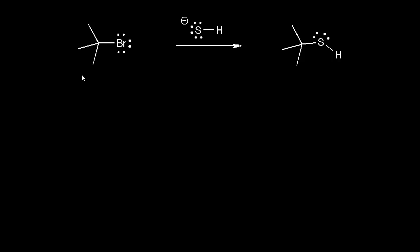In this video, we're going to look at the SN1 mechanism, starting with our alkyl halide. In the first step, we get loss of a leaving group. The electrons in this bond come off onto the bromine to form the bromide ion. When that happens, we take a bond away from the carbon in red, so that carbon gets a plus one formal charge — we have a carbocation.